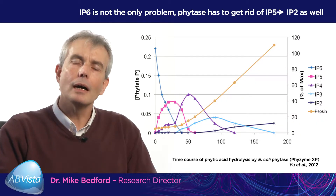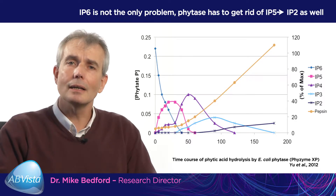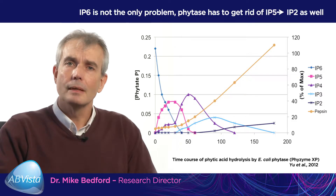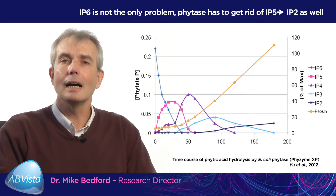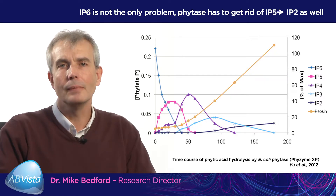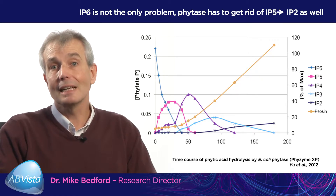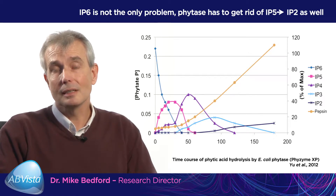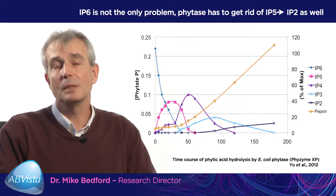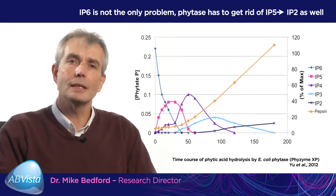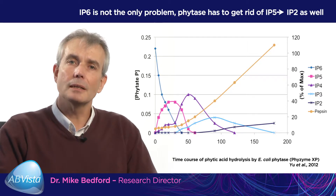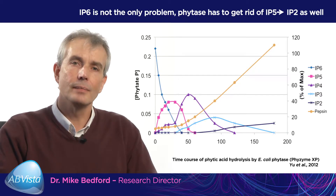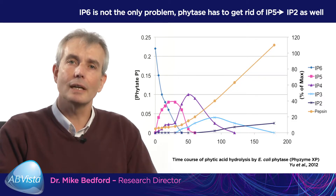At the very beginning of the experiment where IP6 or phytic acid concentration was very high, there is virtually no pepsin activity. Now everybody recognizes IP6 as being a significant anti-nutrient, but the interesting point is all of the IP6 is destroyed by 40 minutes, and yet pepsin activity is only at about 20% of maximum activity at this point. Even when IP5 has disappeared at around 60 minutes, the activity of pepsin is still only 20% of maximum. IP4 is completely removed at about 120 minutes and still pepsin is only 70% active. It's not until IP3 has disappeared that you see full activity of pepsin.